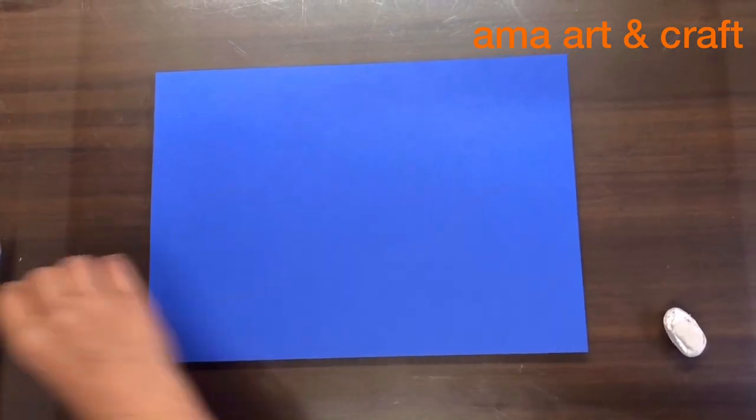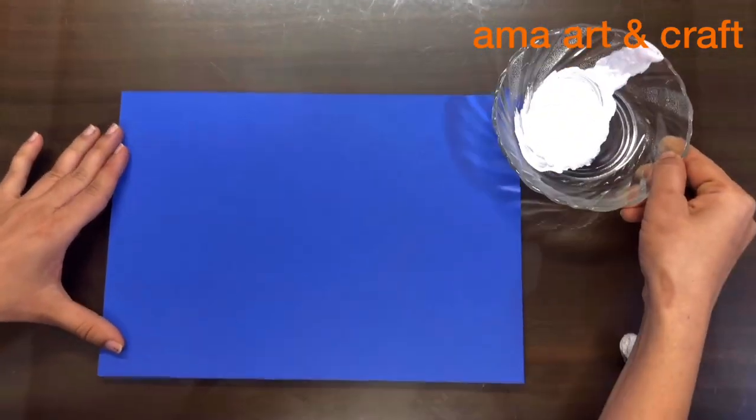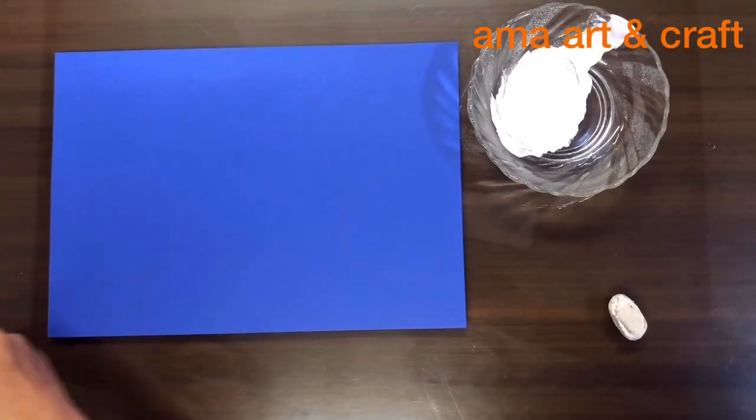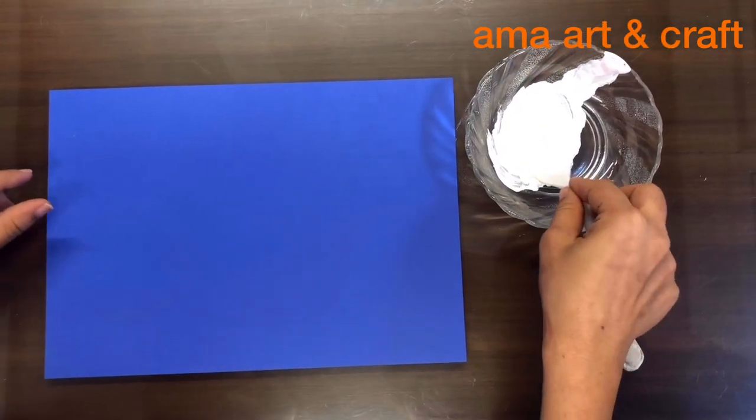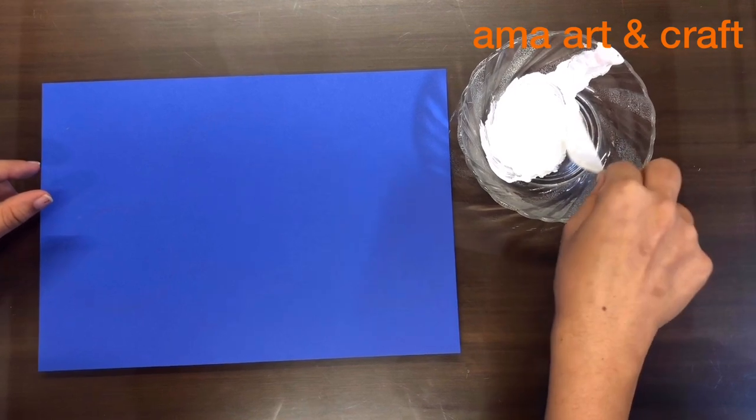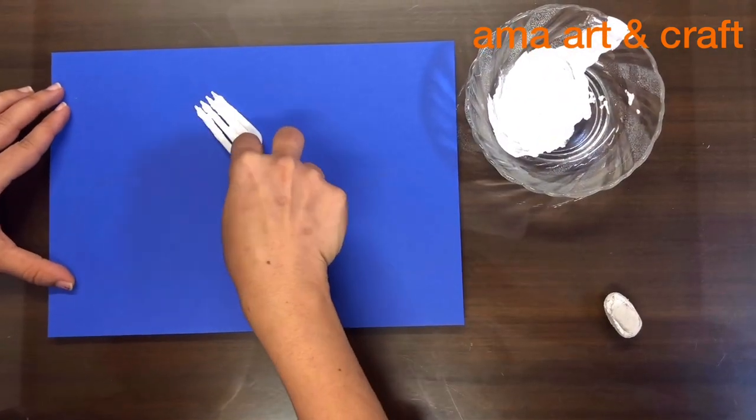Now we will take white color and dip the fork like this and print.